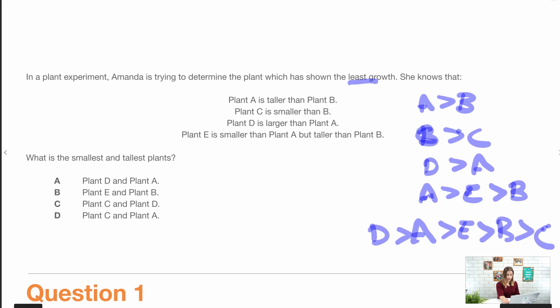When we're going back to these answers, we just have to match this up. Which one has D as the tallest and C as the smallest? The answer is C. Plant C is the smallest and plant D is the tallest.